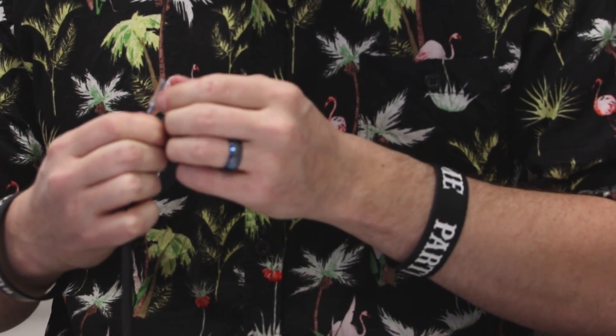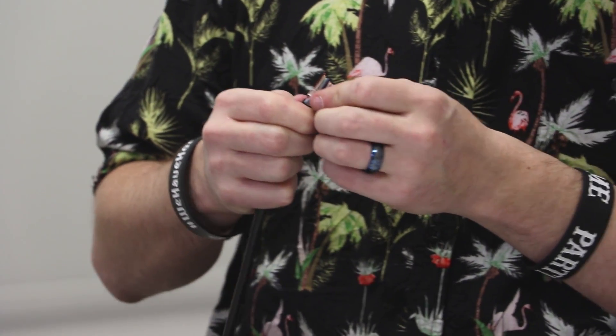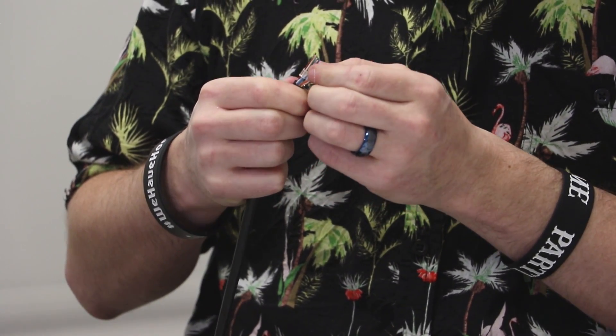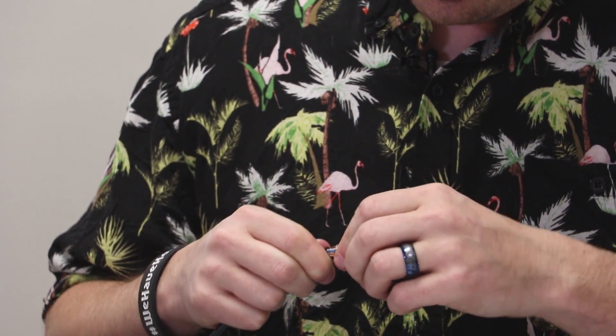Before we crimp our cabling, just like I was talking about, we want to make sure our copper is still in order. So, orange white, orange, green white, blue, blue white, green, brown white, brown.